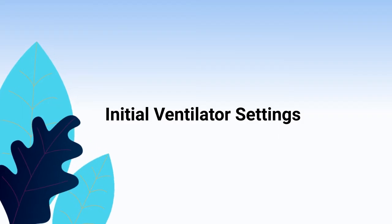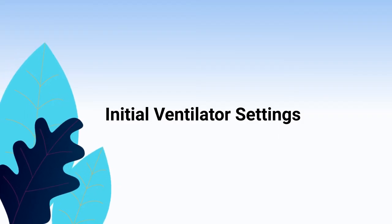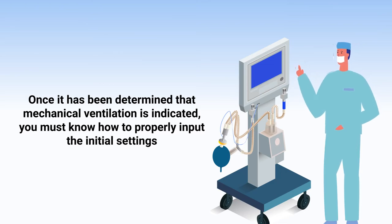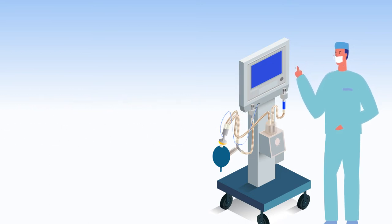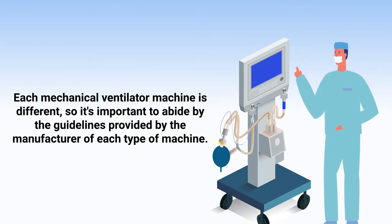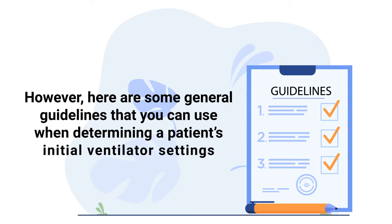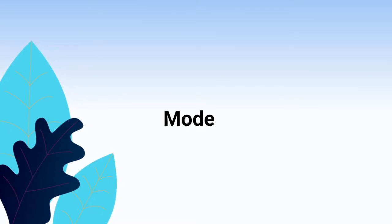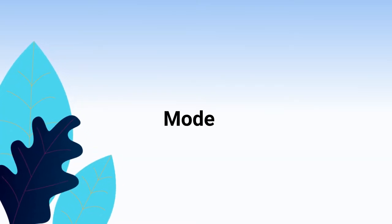Moving right along, now we need to talk about the initial ventilator settings. Once it has been determined that mechanical ventilation is indicated, you must know how to properly input the initial settings. Each mechanical ventilator machine is different, so it's important to abide by the guidelines provided by the manufacturer. However, here are some general guidelines you can use when determining a patient's initial ventilator settings.